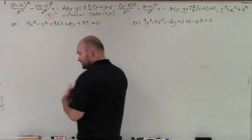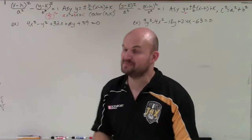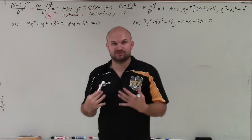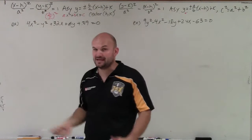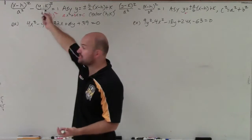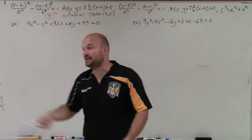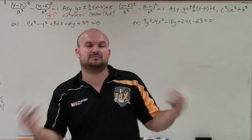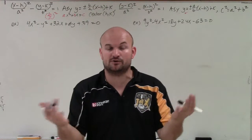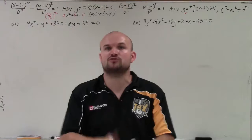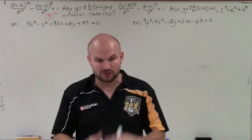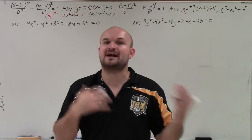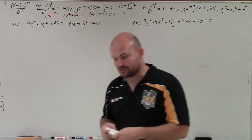Previously, just like we did for parabolas, circles, and ellipses, we always had binomial squares. Binomial squares help us identify our a, h, and k, as well as having something in a rational form to determine our a and b. This equation is not in that format, so it's very difficult to identify those values. What we want to do is create a binomial squared — and to do that, we have to create a perfect square trinomial that we can factor down to a binomial squared. That process is completing the square.